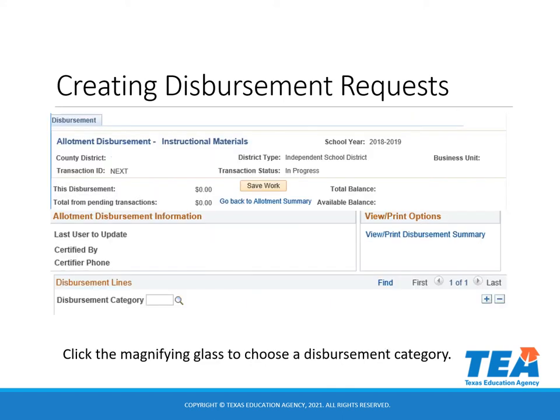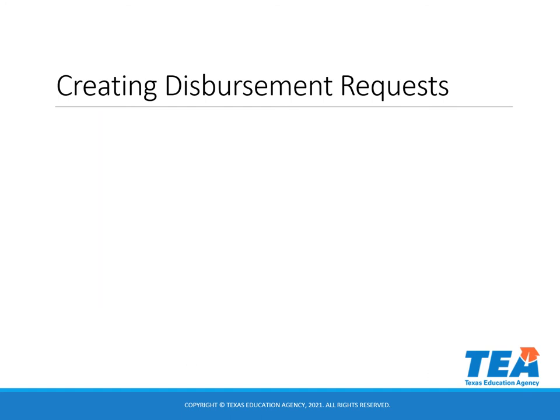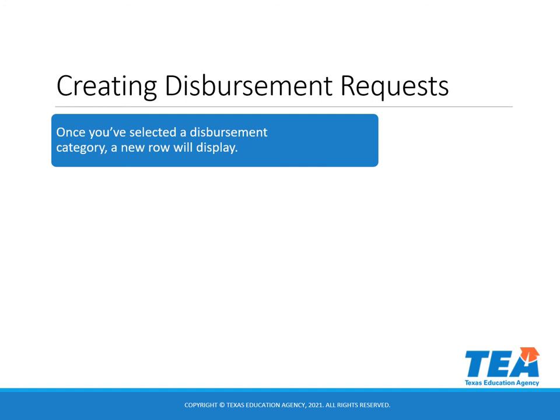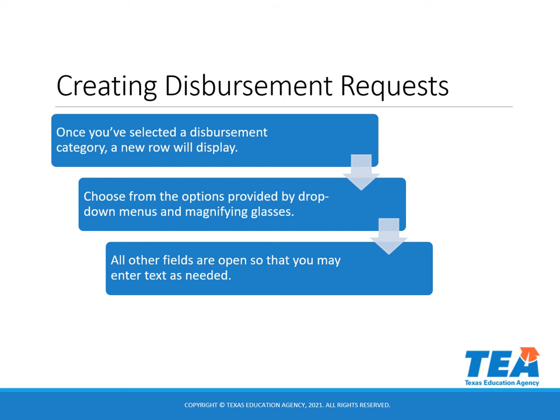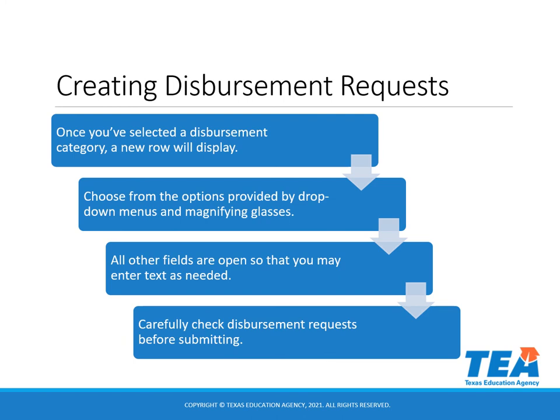Click the magnifying glass to choose a disbursement category. Once you've selected a disbursement category, a new row will display. Choose from the options provided by drop-down menus and magnifying glasses. All other fields are open so that you may enter text as needed. Carefully check disbursement requests before submitting. Review the trainings for each disbursement type to know what information should be entered in each field.